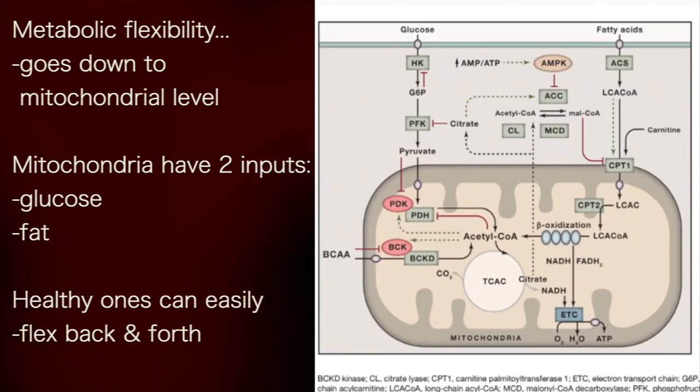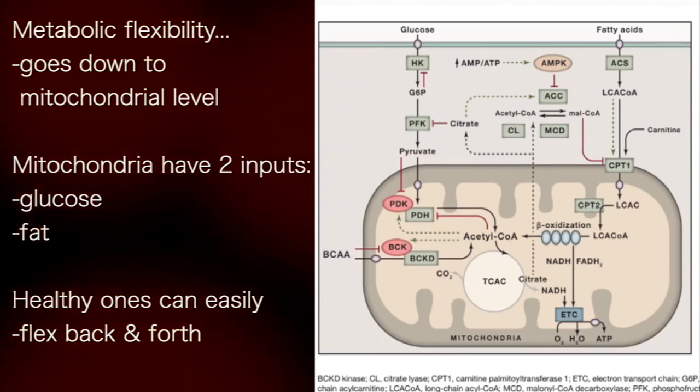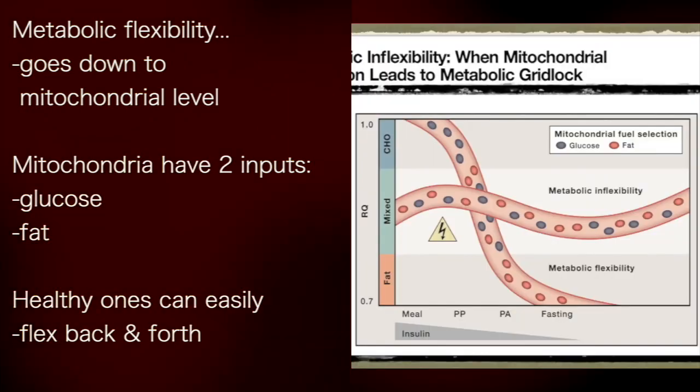This concept of metabolic flexibility goes all the way down to the mitochondrial level. So here's your mitochondria with the two inputs, glucose and fat. And a healthy mitochondria can easily flex back and forth.